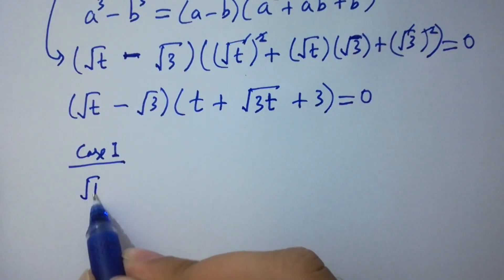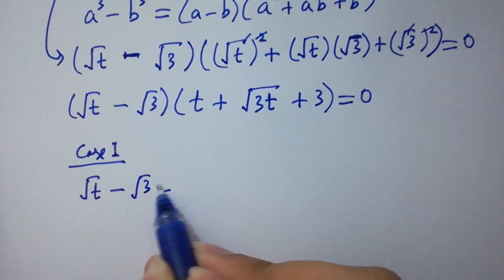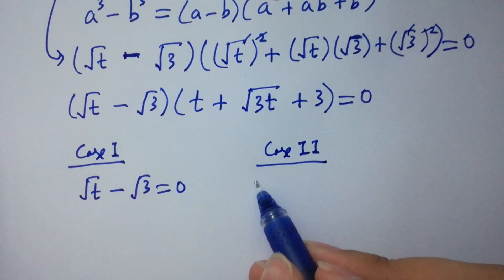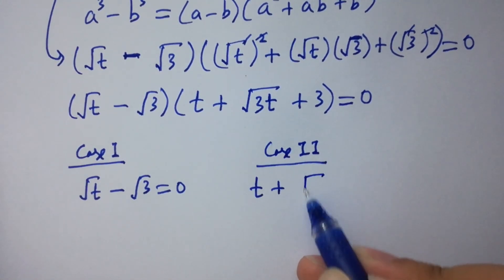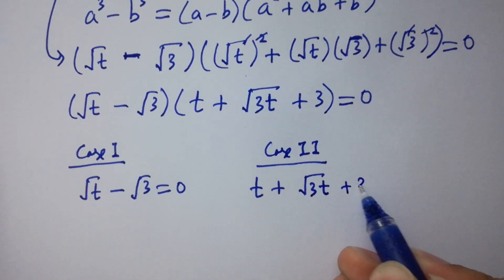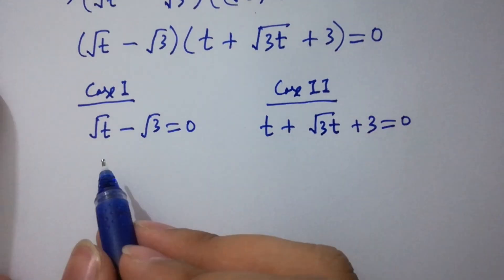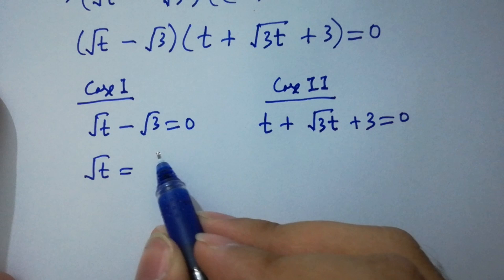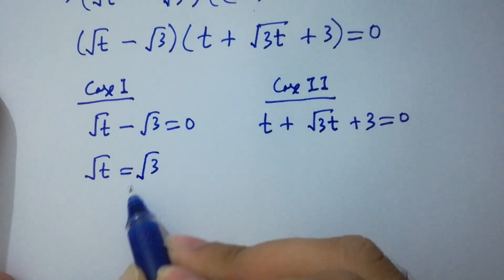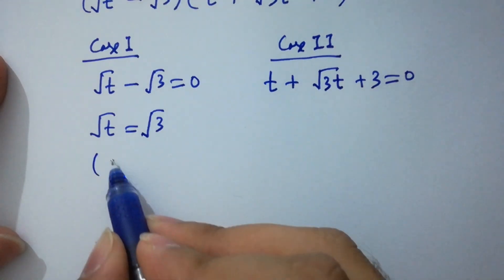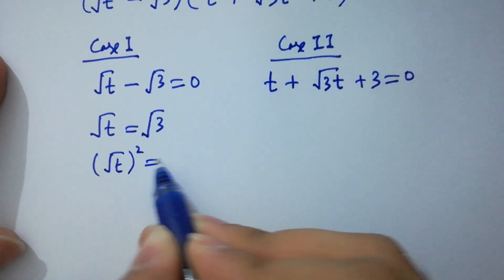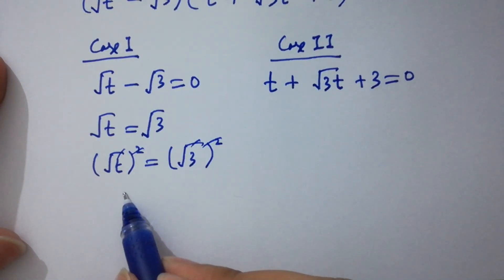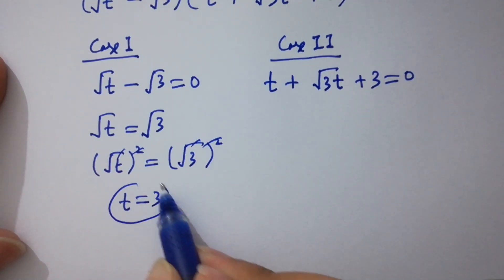Case one: square root of t minus square root of 3 equals 0. From case one, it can be written as square root of t equals square root of 3. Squaring both sides, the square root cancels, and we get the real solution t equals 3.